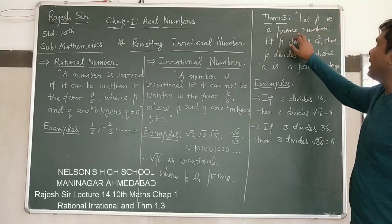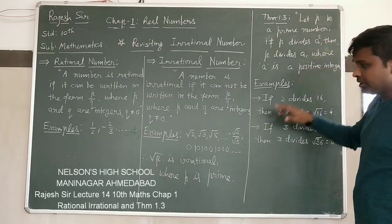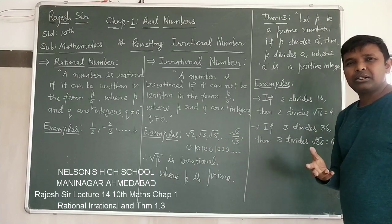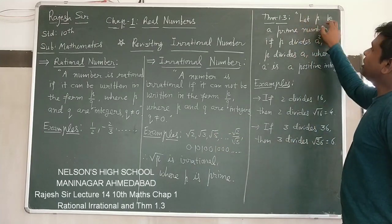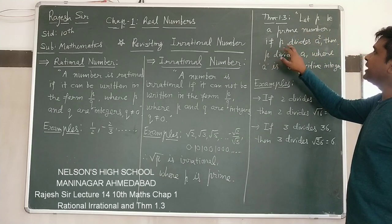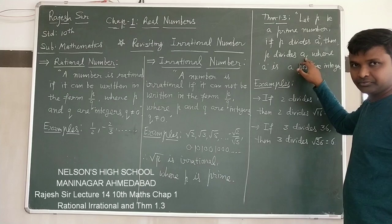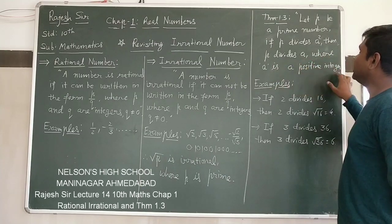Let P be a prime number. Prime number is like 2, 3, non-divisible numbers. Let P be a prime number. If P divides A square, then P divides A also, where A is a positive integer.